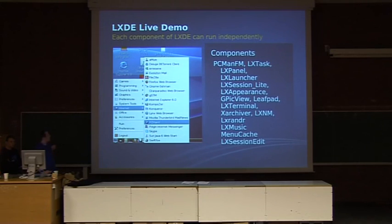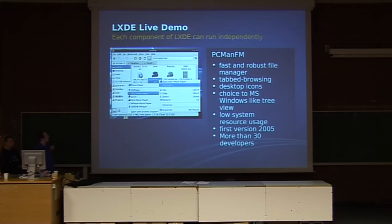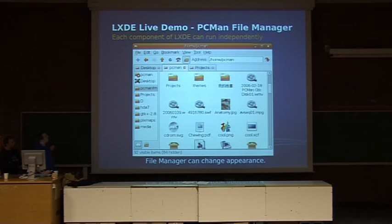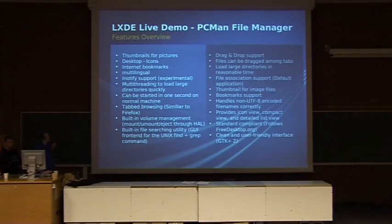Here we have the components themselves. You see the desktop with the main menu. You see PCMan, the file manager with tabs that you can use — especially on small screens, they are very useful. Here you see it on a large screen. This is also another version running on Ubuntu, as you can see from the colors. Here we have a small features overview: thumbnails, desktop icons, internet bookmarks, GTK bookmarks. It's multilingual.